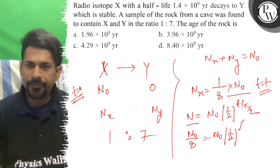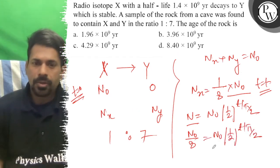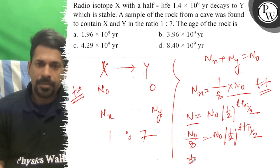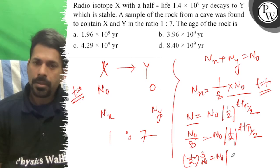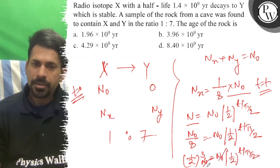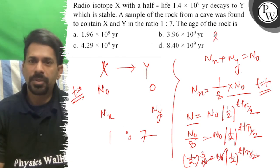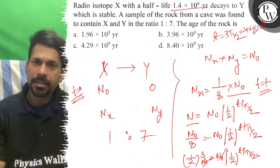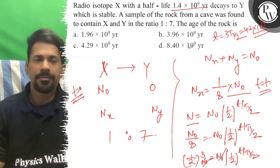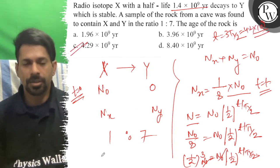Solving this: (1/2)³ equals (1/2)^(t/t½). Cancelling N₀ from both sides, we get t/t½ = 3, so t equals 3 times t½. That gives 3 × 1.4 × 10⁹ years, which equals 4.2 × 10⁹ years. So option C is correct.